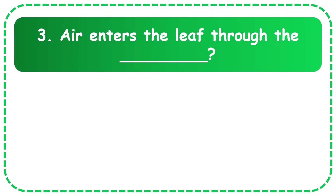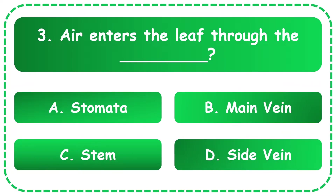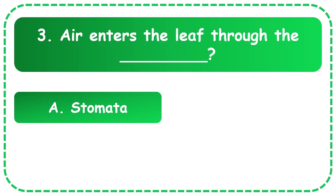Question 3: Air enters the leaf through the tiny pores. The options are stomata, main vein, stem, or side vein. The correct answer is stomata.